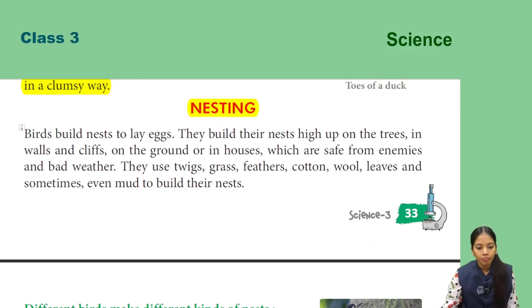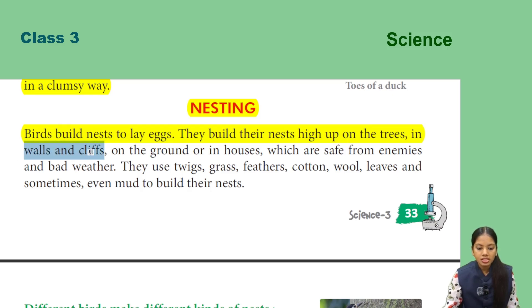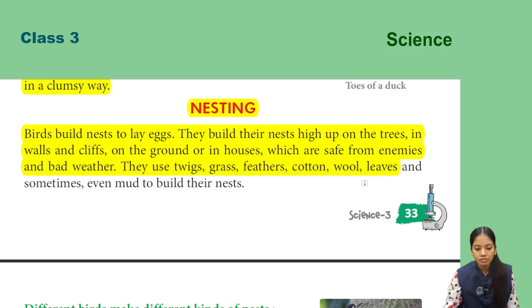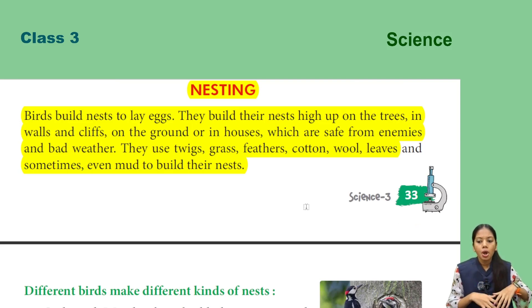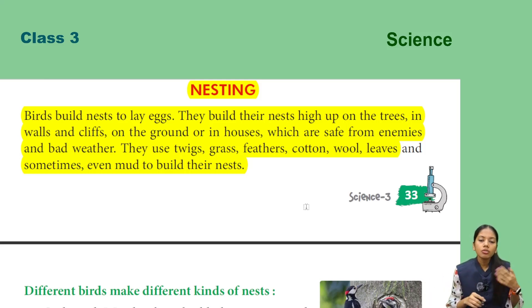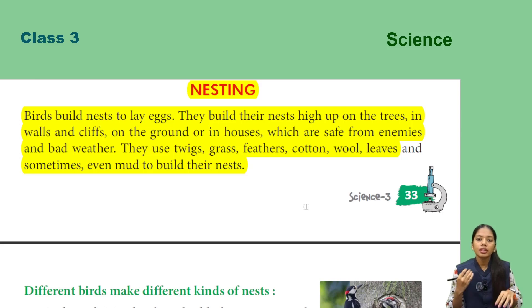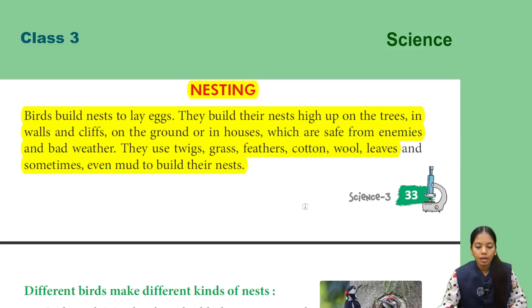Now let's read about nesting. Birds build nests to lay eggs. They build their nests high upon trees, in walls and cliffs, on the ground, or in houses — places that are safe from enemies and bad weather. They use twigs, grass, feathers, cotton, wool, leaves, and sometimes even mud to build their nests.